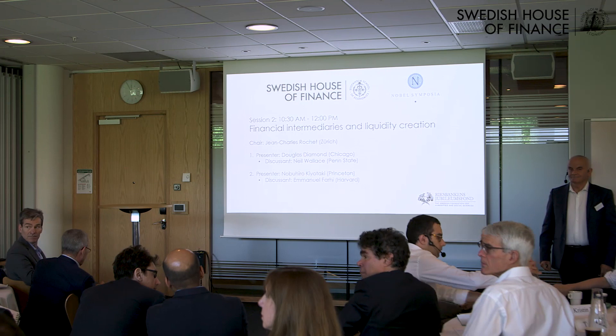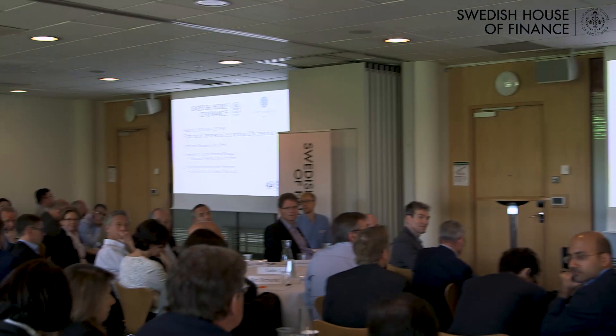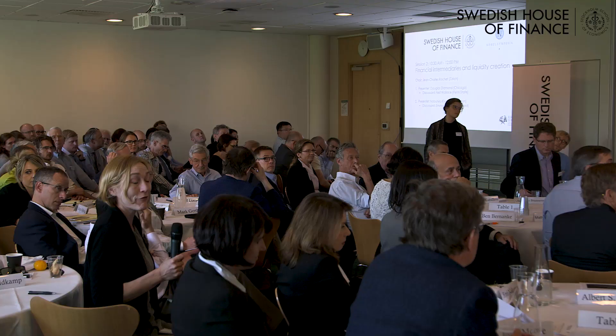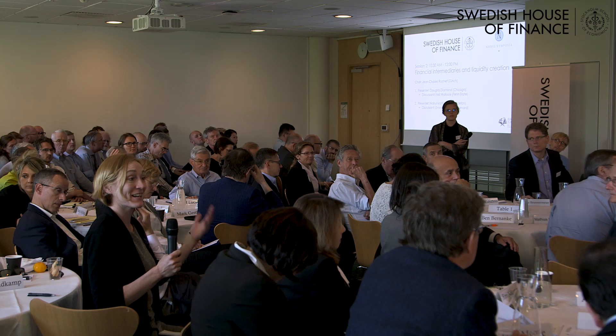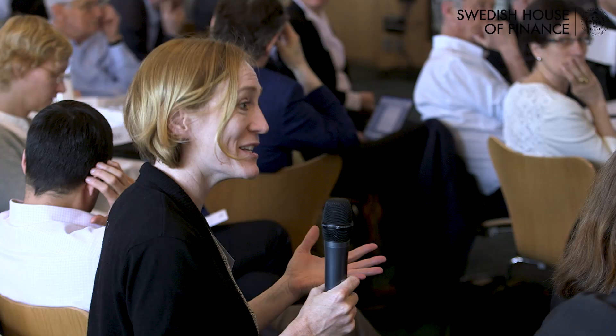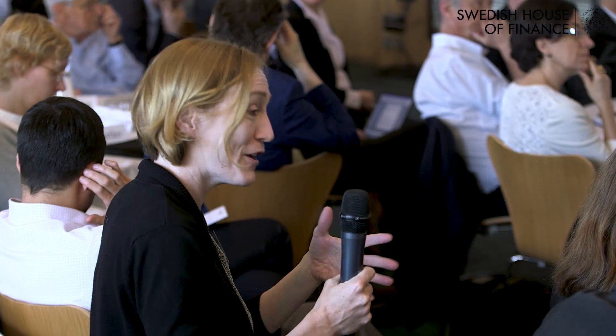Technology is changing lending. We have machine learning that can process large amounts of data and predict defaults, possibly better than relationship lending. We have online platforms connecting borrowers and lenders, like Lending Club. Blockchain-based currencies offer new ways to store value. The question is: in a world where the technology of banking is changing, is this just a new implementation of the same fundamental economics, or will it change some of the basics of the relationships described?